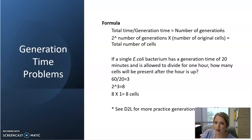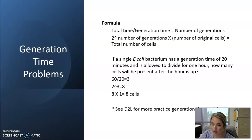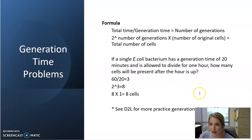Once we have the number of generations, we take two and raise it to the power of that number. The two never changes because bacterial cells always double. Then, the last step is to multiply that number by the number of original cells. So for this problem, we take the total time of 60 minutes and divide by the generation time of 20 minutes, giving us three — meaning E. coli can go through three binary fission cycles in one hour.